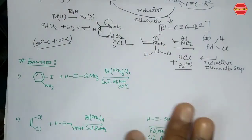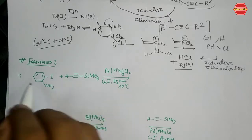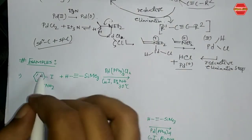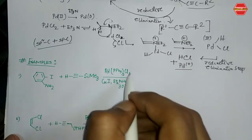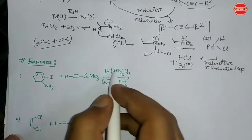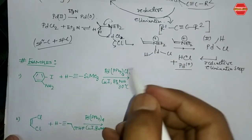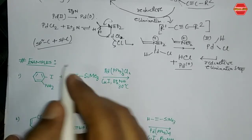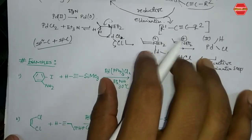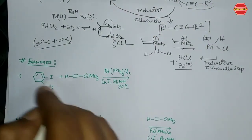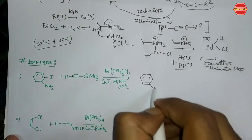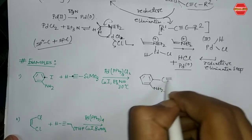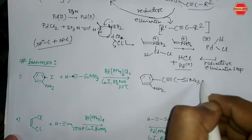Let's see some examples. In the first example, an iodoamine is given along with an alkyne coupling partner, together with PdCl2 and copper(I). The first step is oxidative addition where palladium inserts into the C–I bond. After transmetallation and reductive elimination, the two carbon fragments are bonded to each other and you get the final coupled product as the major product.